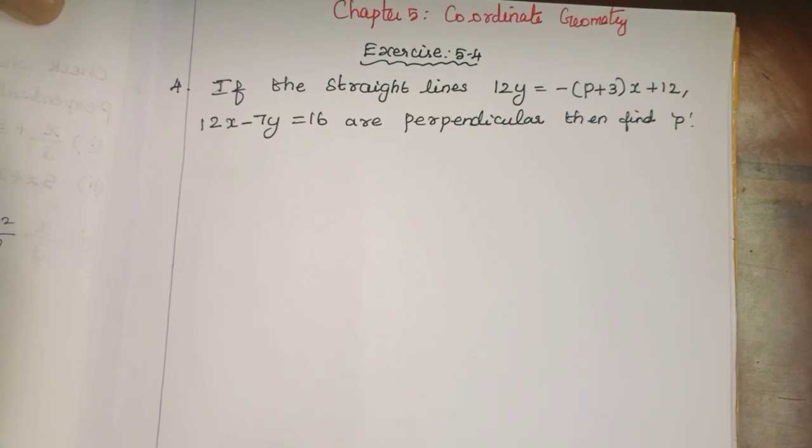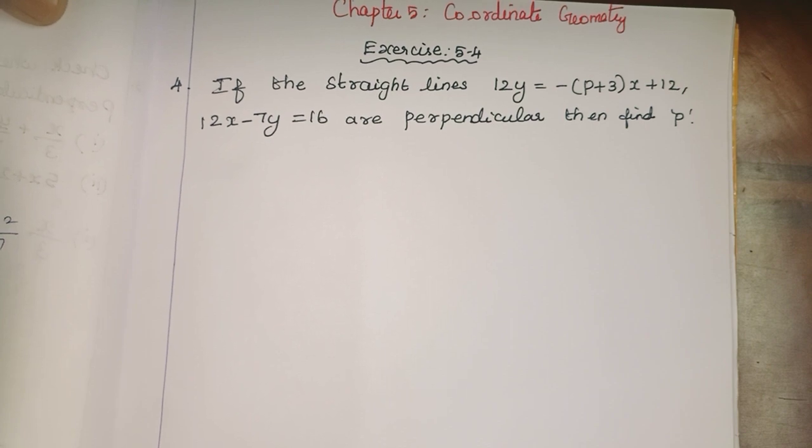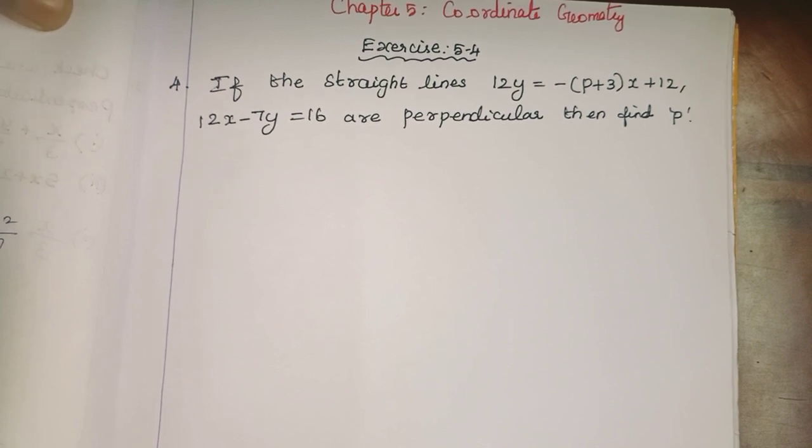So, two lines are perpendicular. What is the condition? The product of their slopes will be equal to -1.